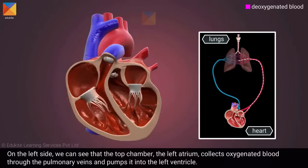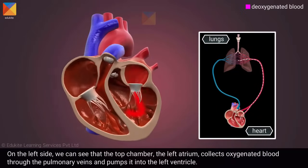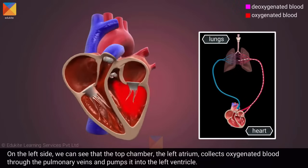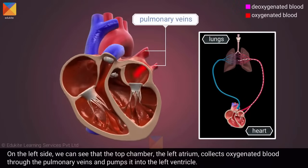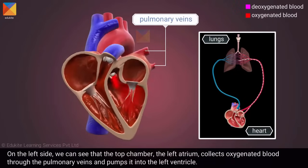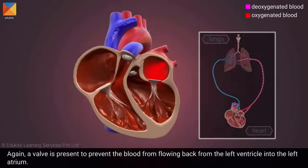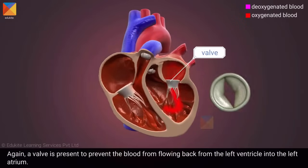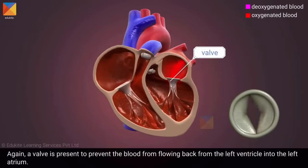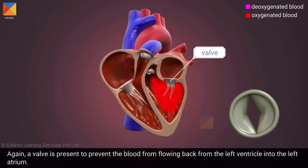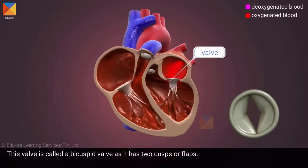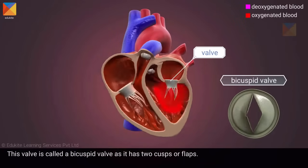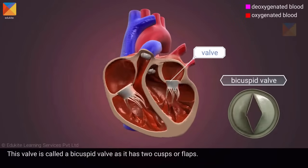On the left side we can see that the top chamber, the left atrium, collects oxygenated blood through the pulmonary veins and pumps it into the left ventricle. Again, a valve is present to prevent the blood from flowing back from the left ventricle into the left atrium. This valve is called a bicuspid valve as it has two cusps or flaps.